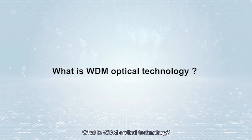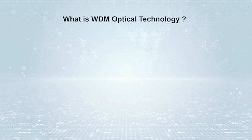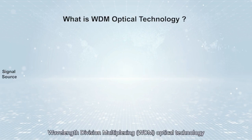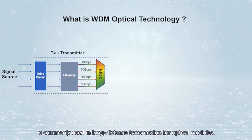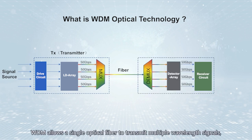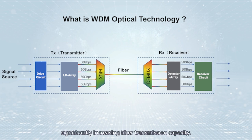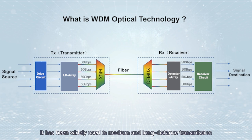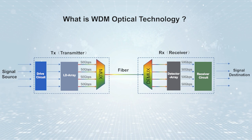Wavelength division multiplexing (WDM) optical technology is commonly used in long-distance transmission for optical modules. WDM allows a single optical fiber to transmit multiple wavelength signals, significantly increasing fiber transmission capacity. It has been widely used in medium and long-distance transmission of optical communication and interconnection of data centers.